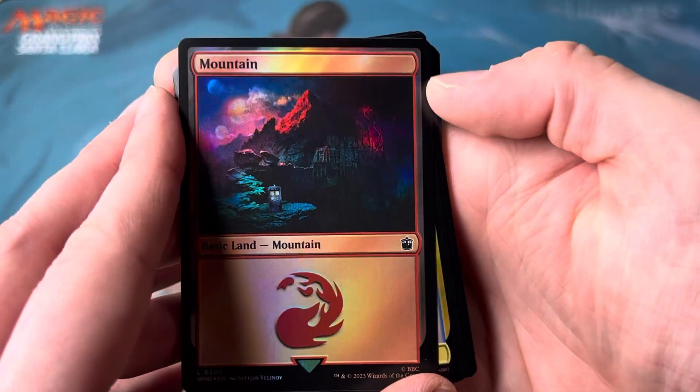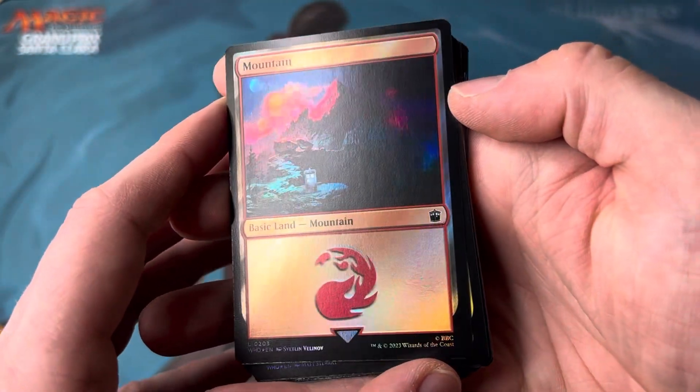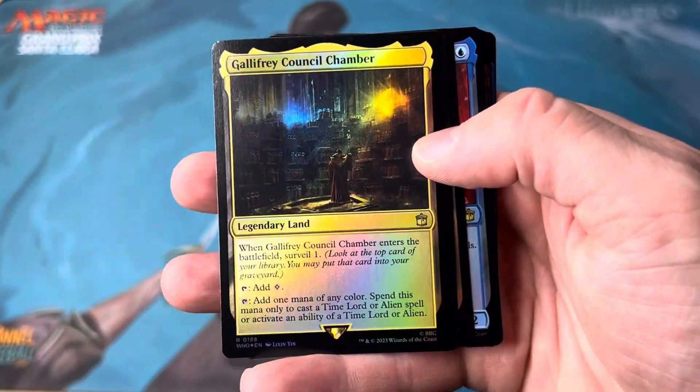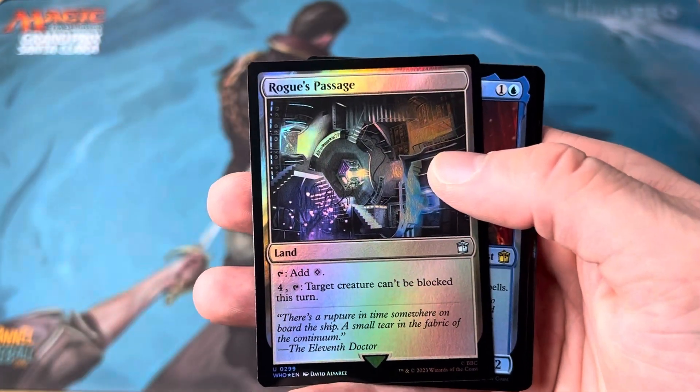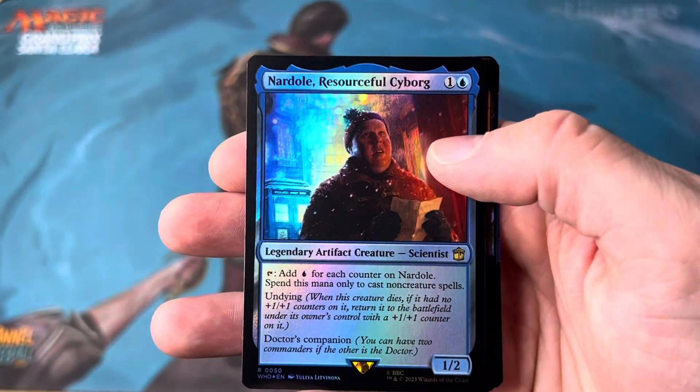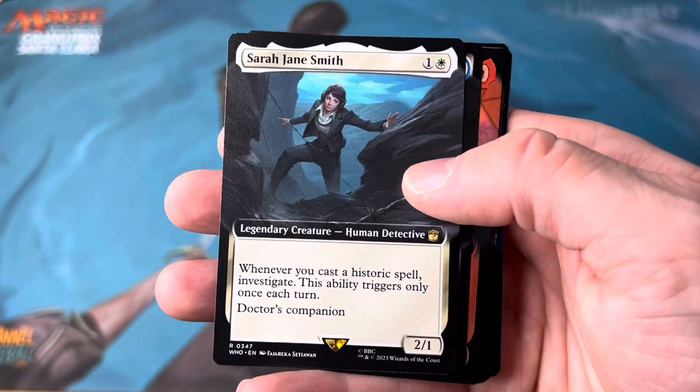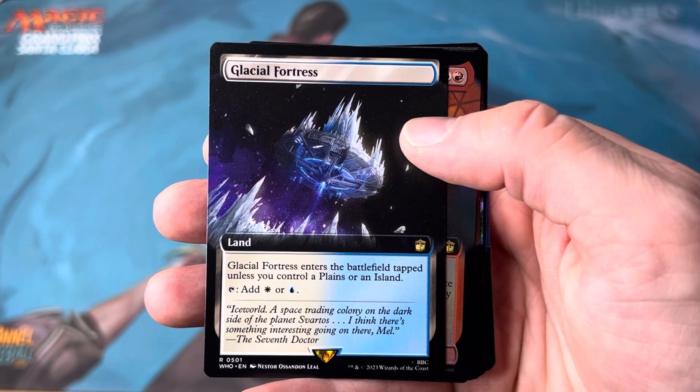Oh my gosh. Beautiful. Absolutely beautiful. All right. Look at how beautiful that is. The sixth doctor. Gallifrey council chamber. Temple of plenty. Road passage. Nardole. I don't think I know which episode he's in. Sarah Jane. Glacial fortress. Beautiful.